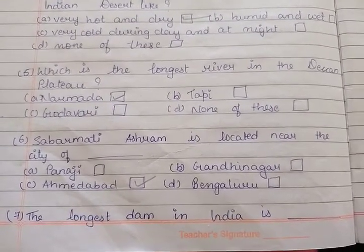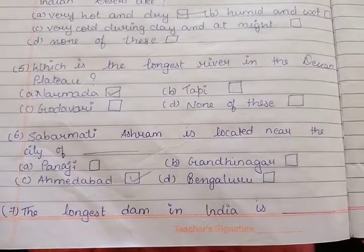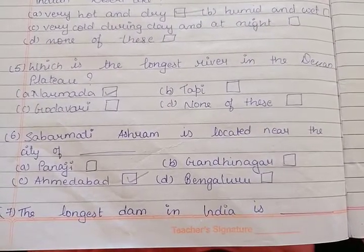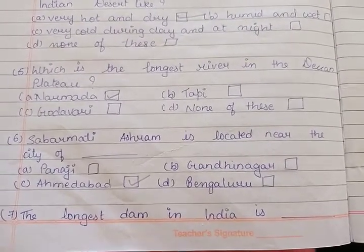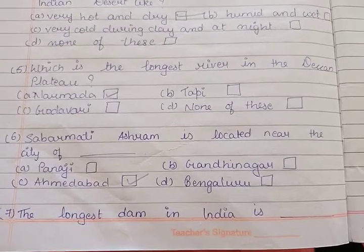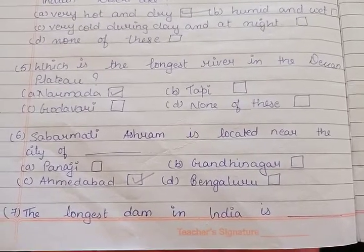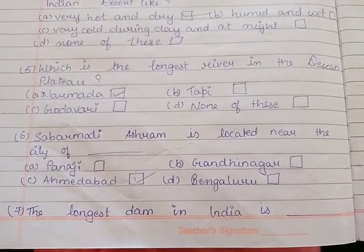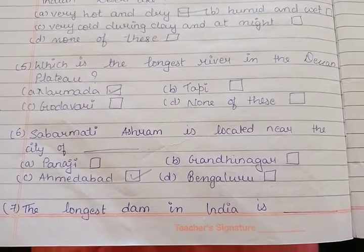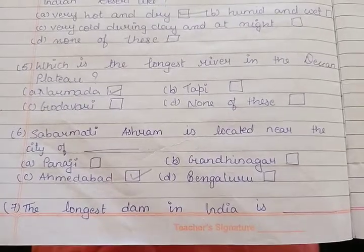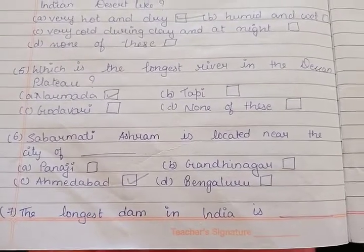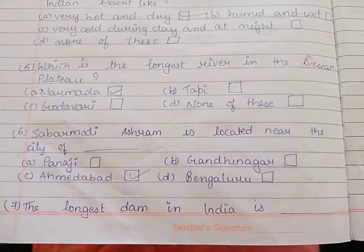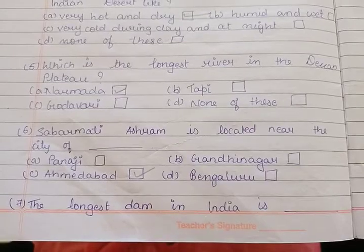Sixth: Near which city is the Sabarmati Ashram located? A Panaji, B Gandhinagar, C Ahmedabad, D Bengaluru. And the answer is Ahmedabad. The Sabarmati Ashram is located near Ahmedabad.